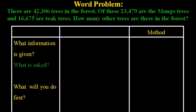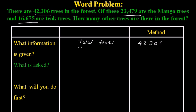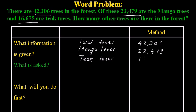The total number of trees is 42,306. Out of these, mango trees are 23,479 and teak trees are 16,675. Now, what is asked? How many other trees are there in the forest?